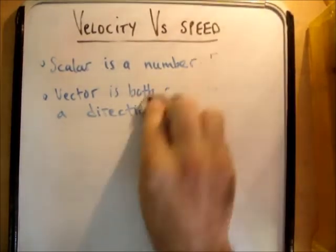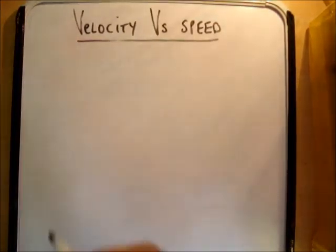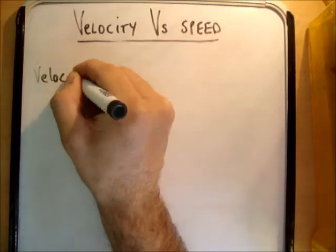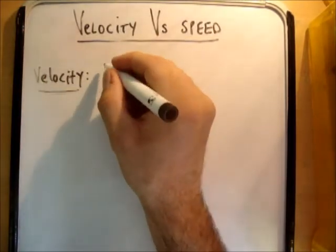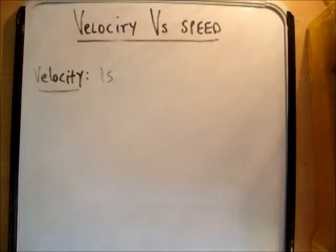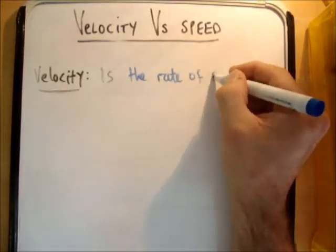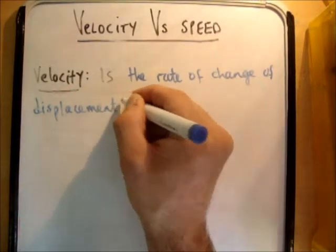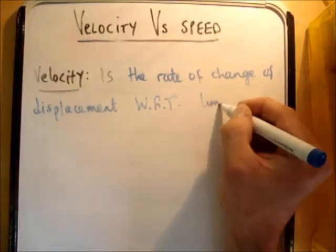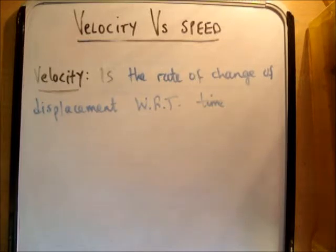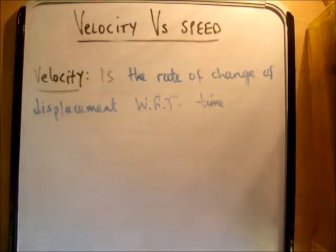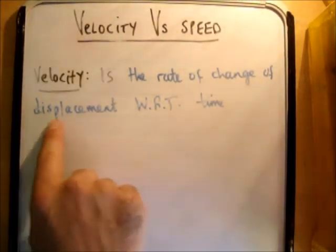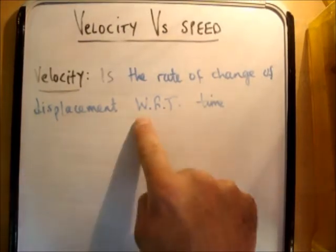Now why does this matter? Velocity is — and this is 100% correct — the rate of change of displacement with respect to time. In the past I would have said velocity is the rate of change of distance with respect to time. However, distance is a scalar with no direction, whereas velocity and displacement must be vectors — they must have a direction associated with them.